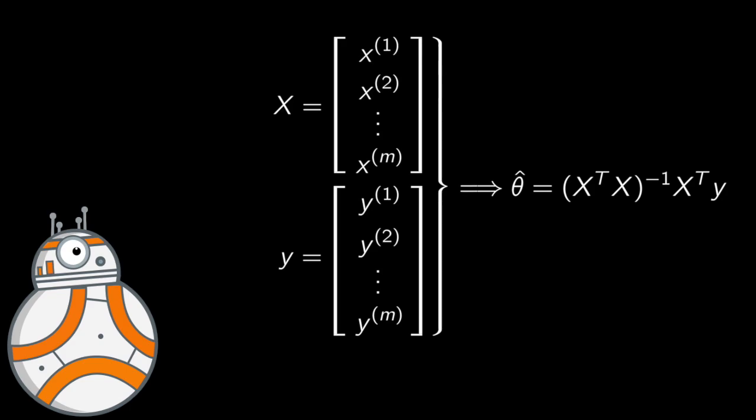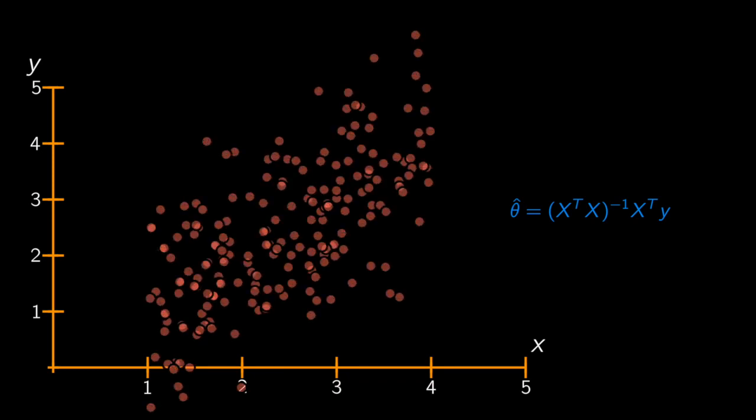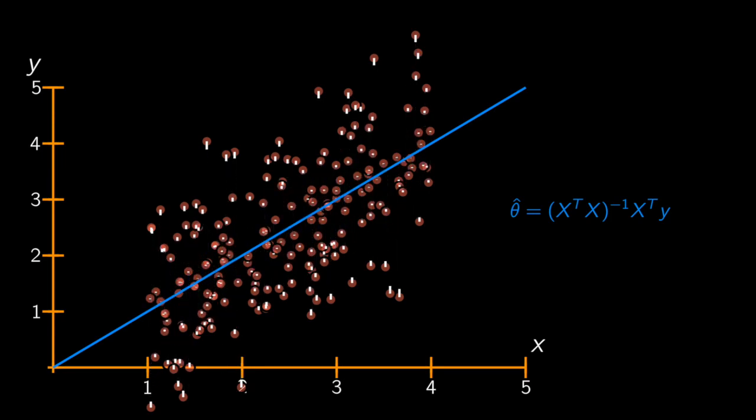As simple as that. So fortunately here we've got a closed form solution to find the best theta, that is to find the best line that fits the data. And as you can see over here, the white lines that you see are the residuals that we talked about. And it turns out that the theta that you see in front of you, which generates the blue line, is the line that minimizes those white distances, right?